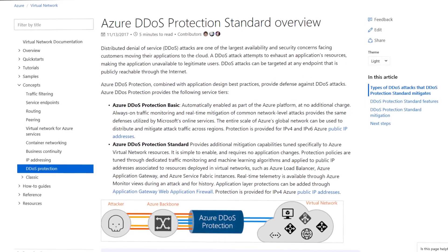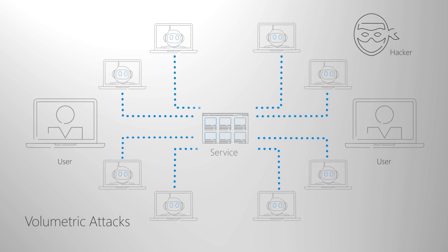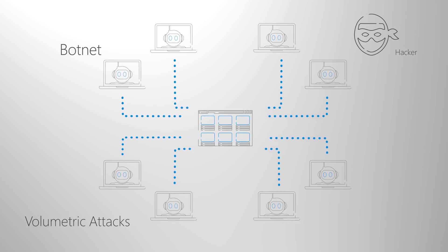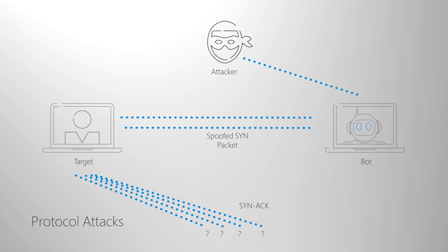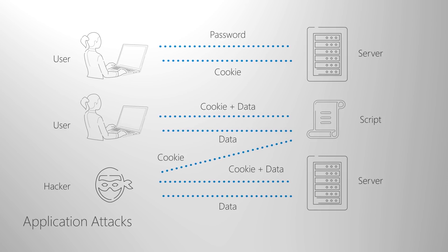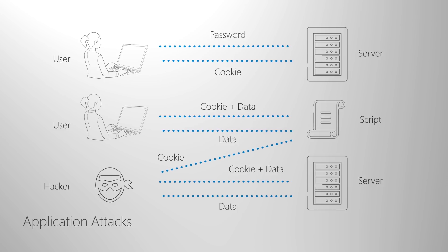Beyond your network controls, for perimeter security Azure's DDoS protection against distributed denial of service attacks is available at a basic level by default. Azure's DDoS protection standard version adds additional protection and mitigations against volumetric attacks, where the attacker's goal is to flood the network with traffic to disable your services; protocol attacks, where the attacker tries to exploit weaknesses in layer 3 and layer 4 protocol stacks; and application layer attacks, where web application packets are used to disrupt data transmission between hosts, like cross-site scripting or HTTP protocol violations.